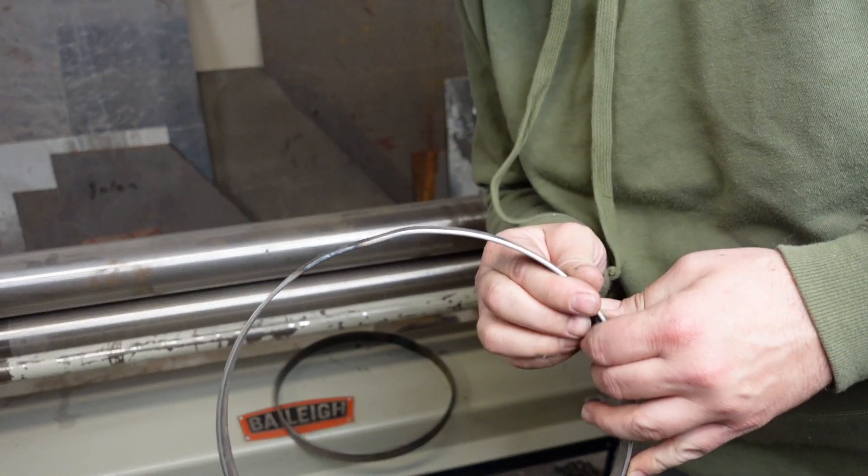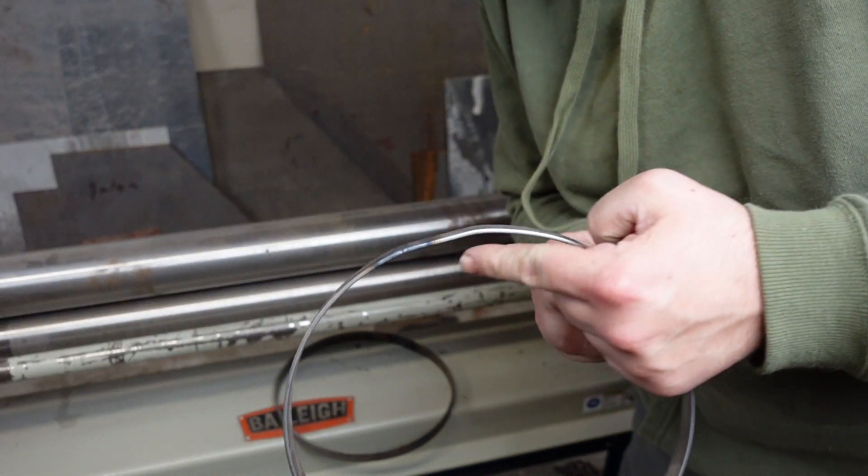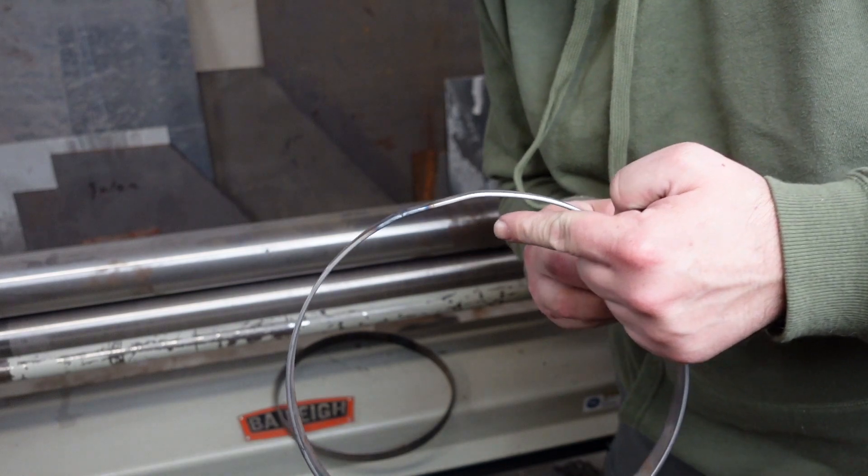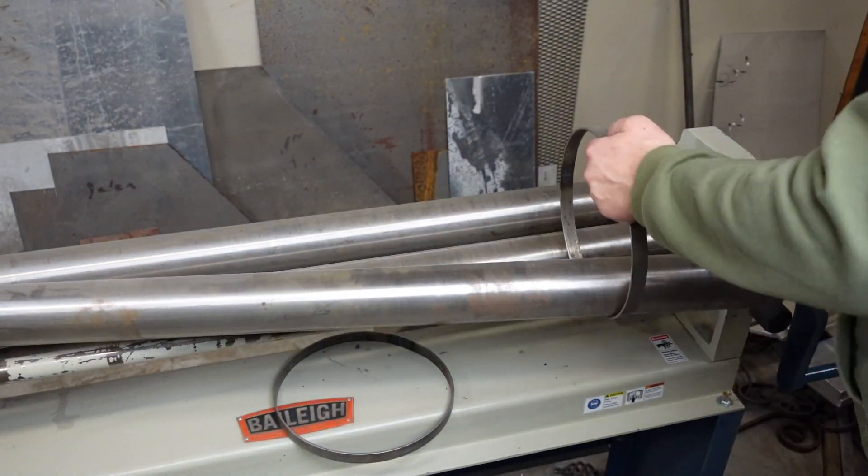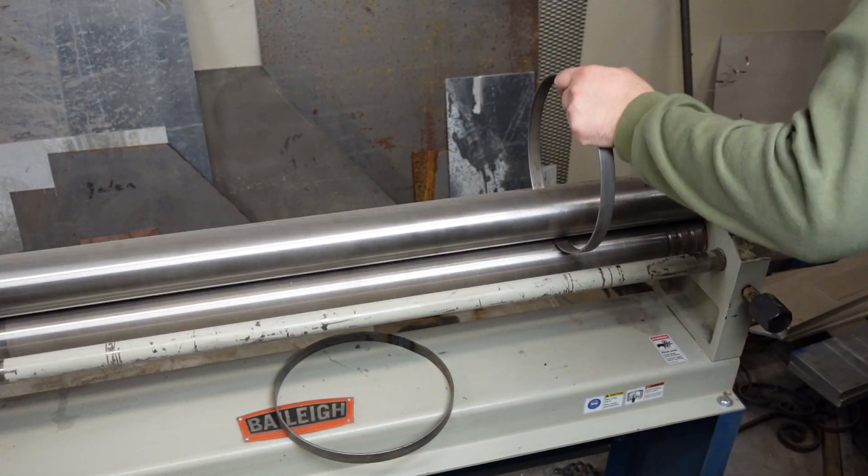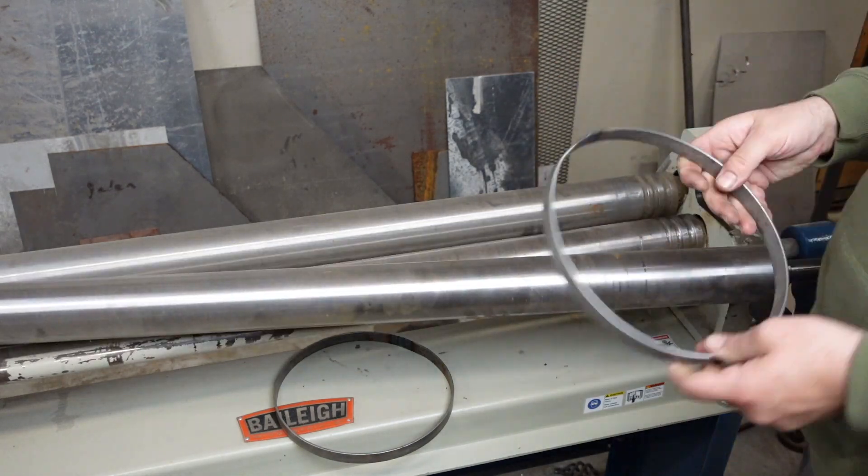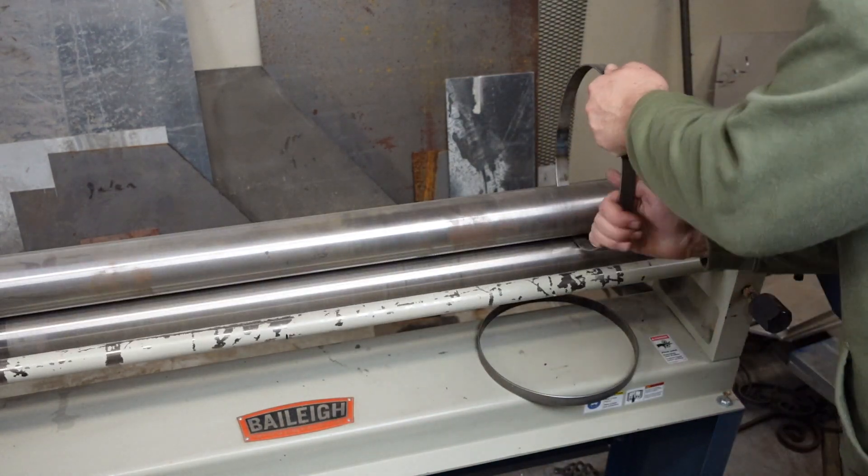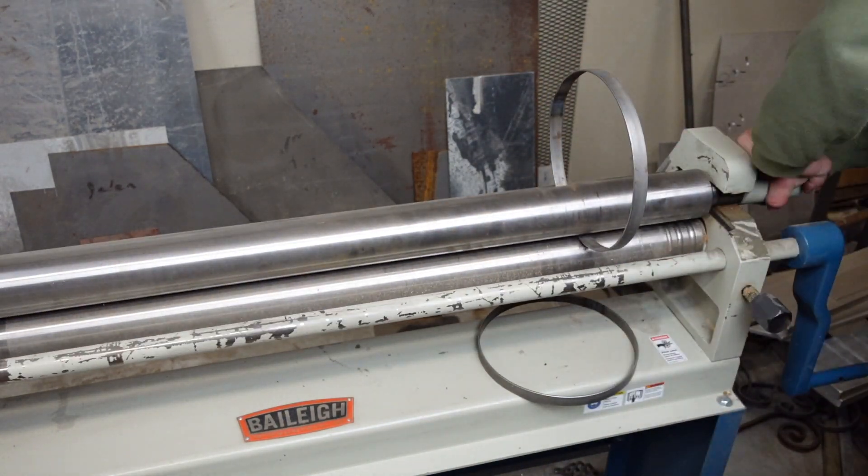So the first part that you stick in the roll always leaves a flat spot, as you can see here. So I welded it, and I'm going to stick it back in the rolls to help kind of flatten it back out, and re-roll it a few times.